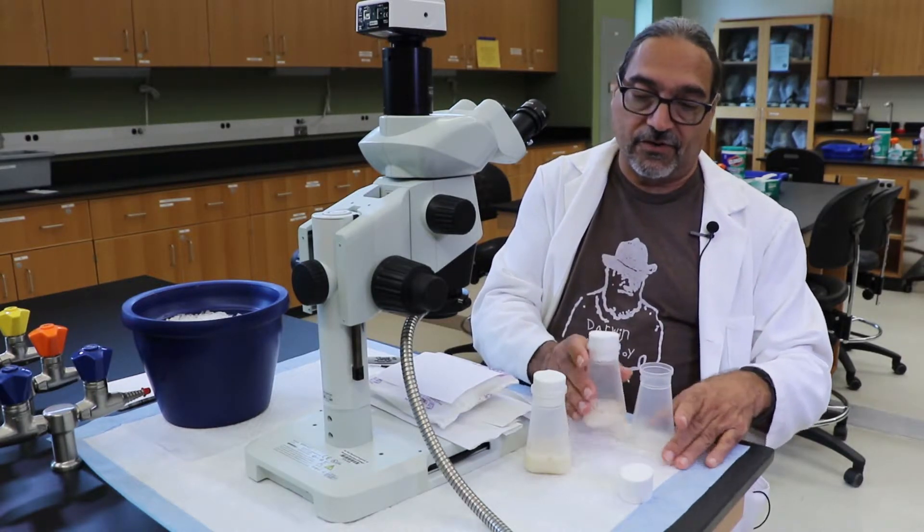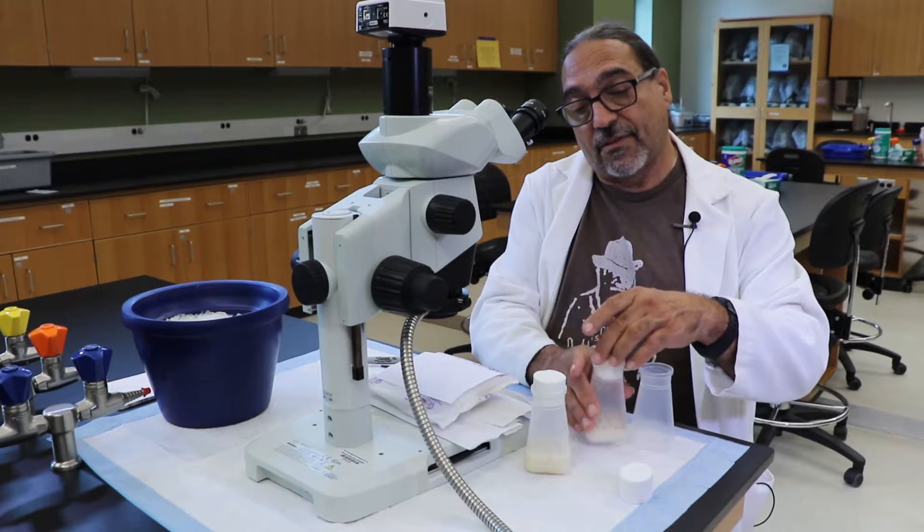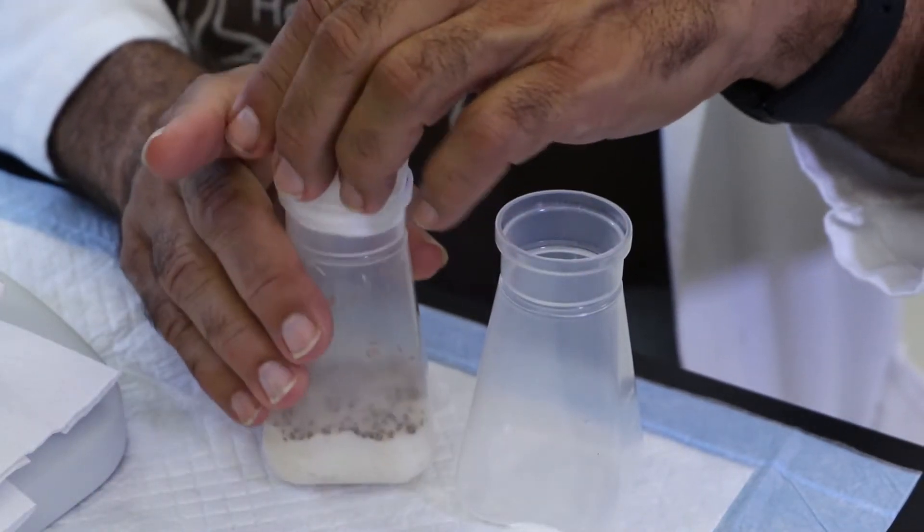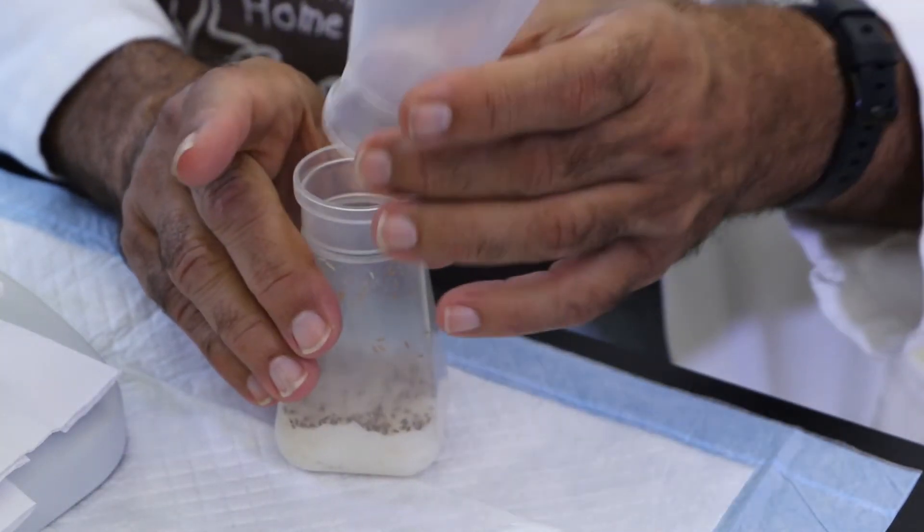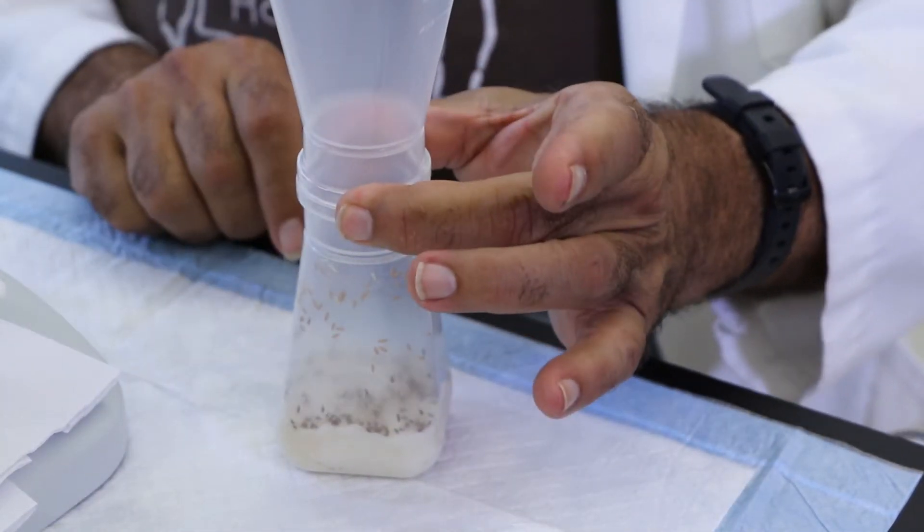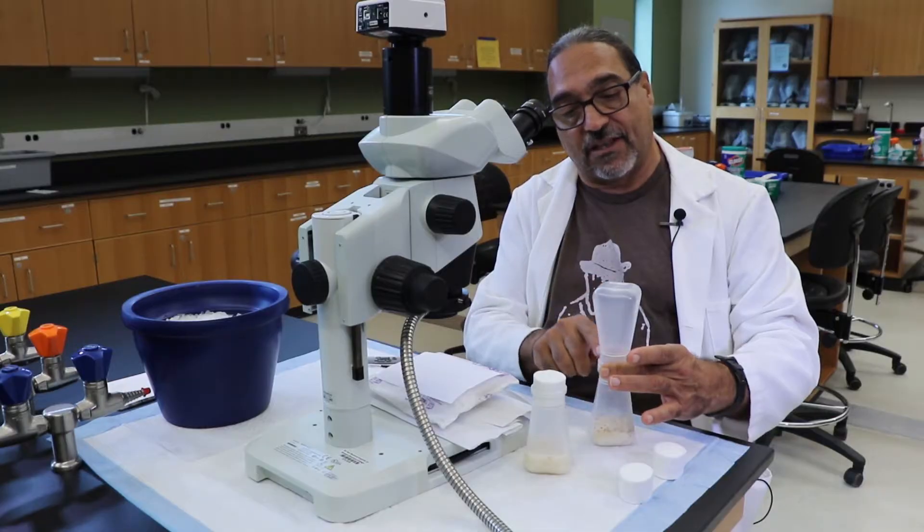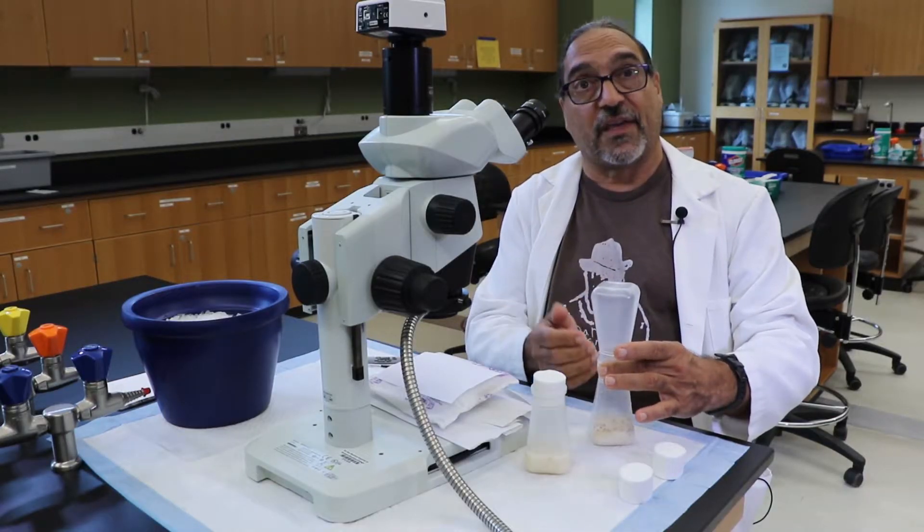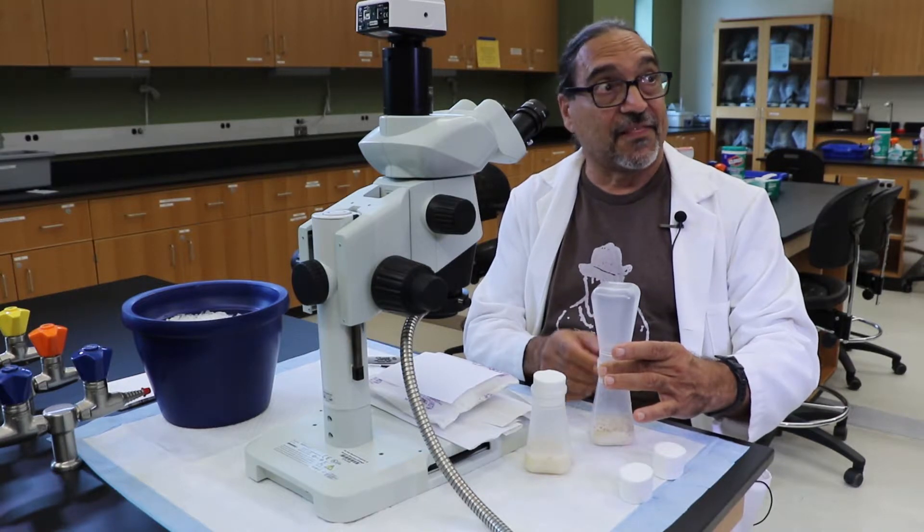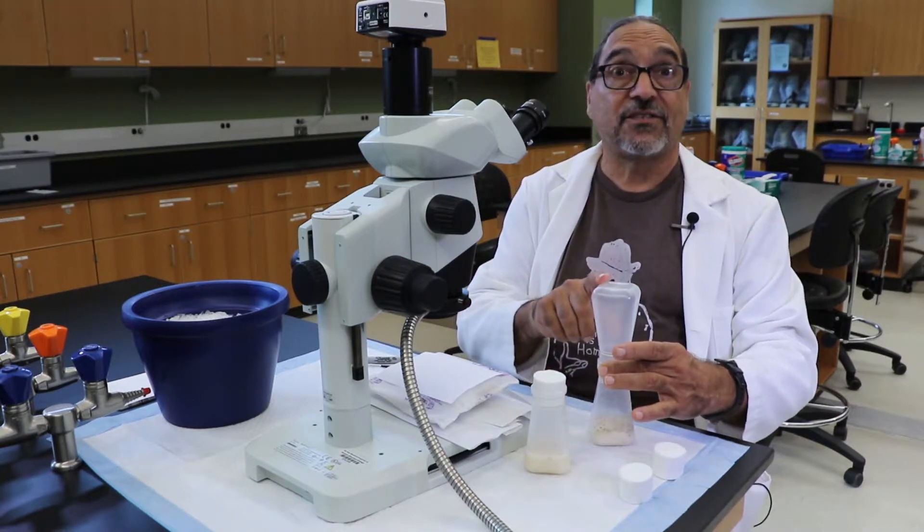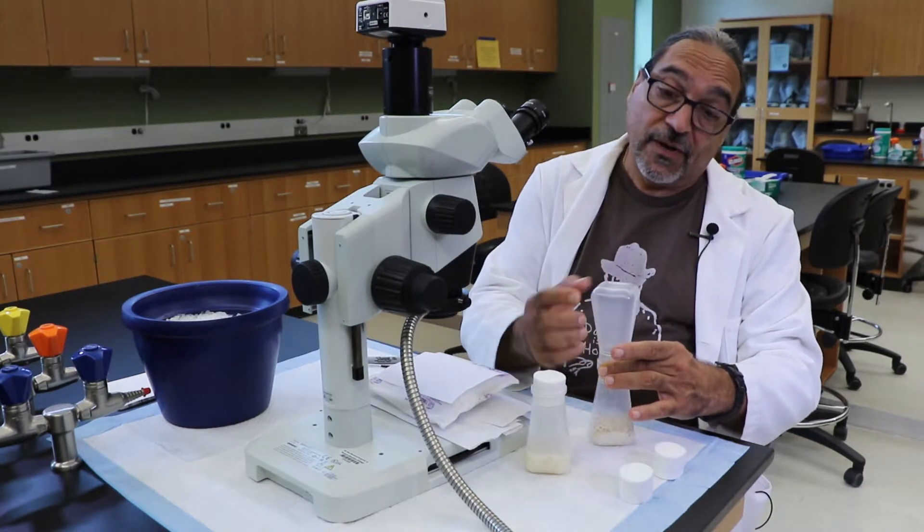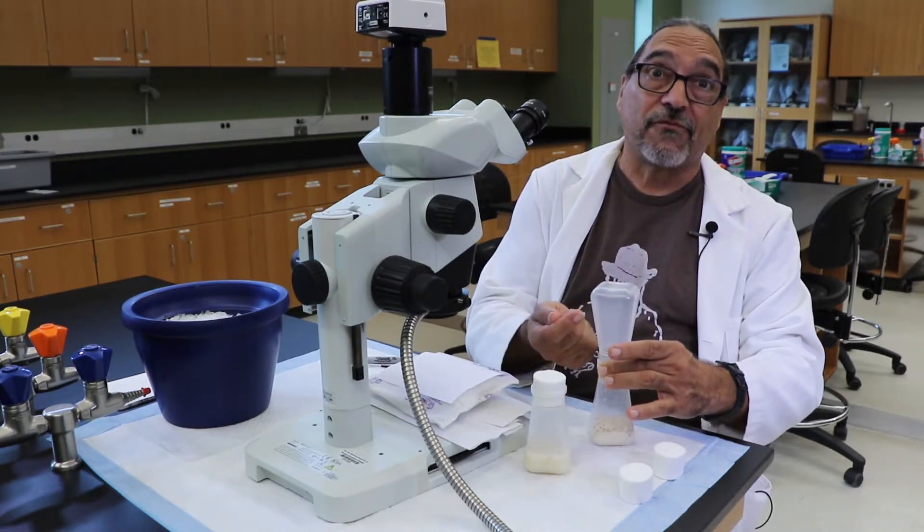So what we're going to do is tap the flies to the bottom of the container, take the top off, and then place the transfer vial right on top. Now you can see that the flies are already beginning to fly into the new vial, because while they are negatively geotaxic, they are also positively phototaxic. And so they go towards the light and away from gravity.